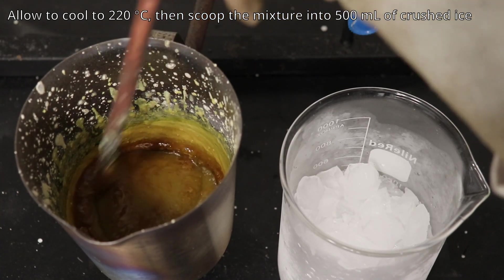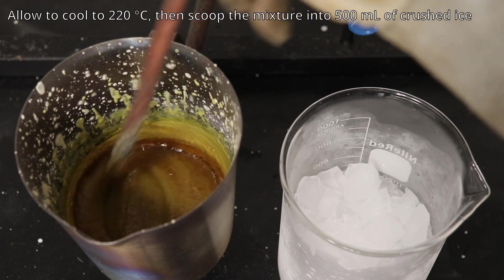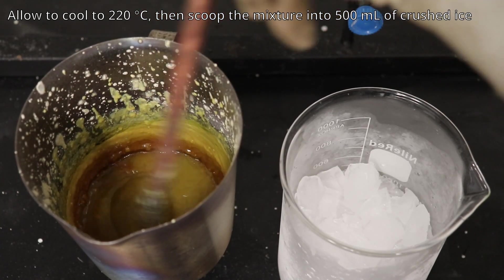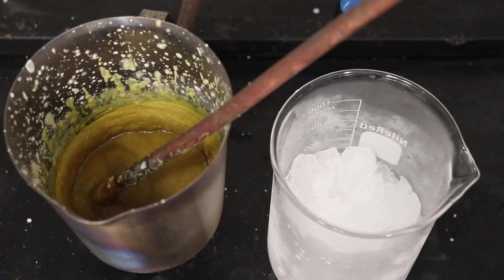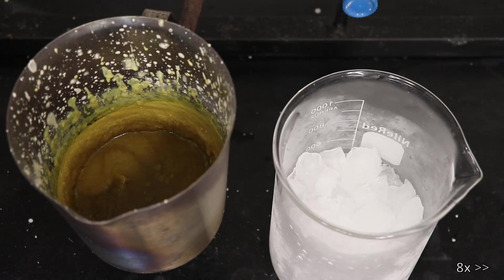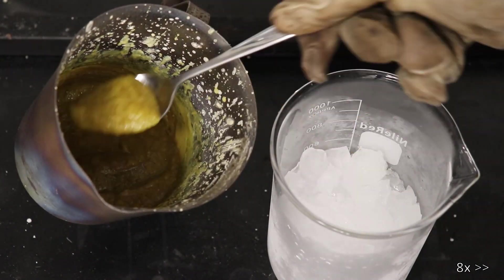After the final 2 minute heating period at 310 degrees Celsius, the flame was removed and the mixture was allowed to cool down to 220 degrees Celsius, before being scooped out into a beaker with 500 grams of crushed ice.